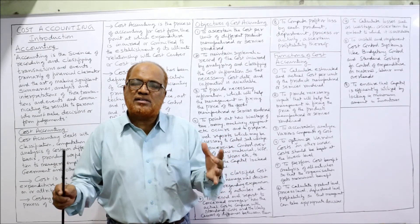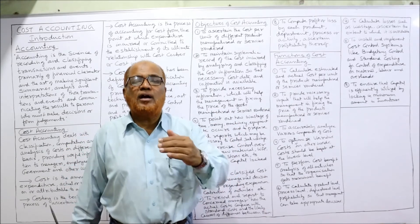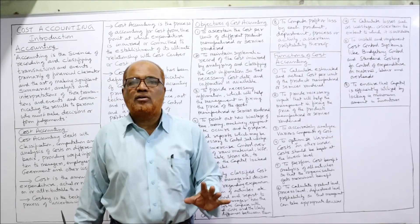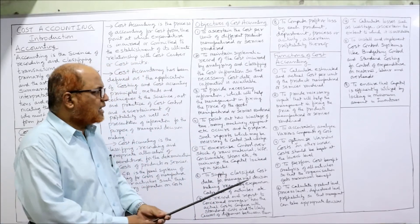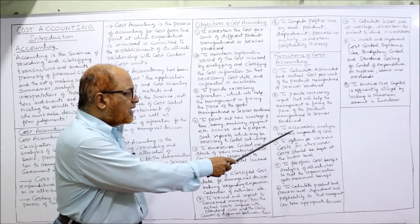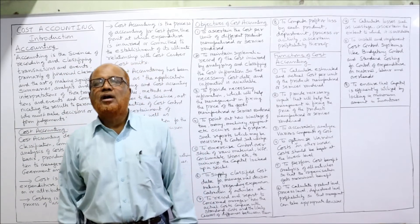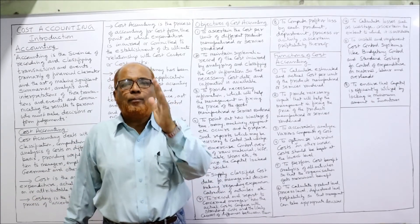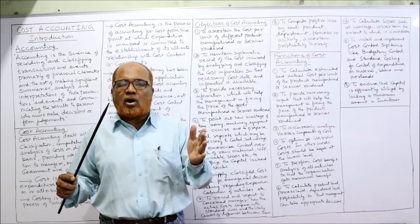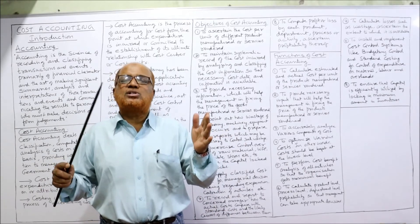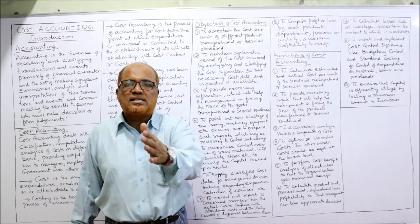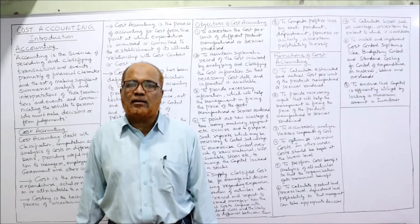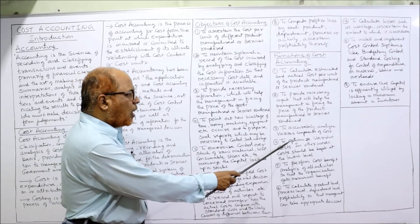It is a function of cost accounting to provide necessary cost information to management so it can facilitate fixing the selling price. Third, to accurately analyze the various components of cost. To control cost we don't just need the total cost — we need the breakdown: how much is incurred on material, how much on labor, how much on overhead. Recording each separately allows us to analyze and control cost accurately.